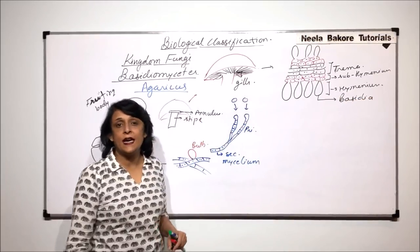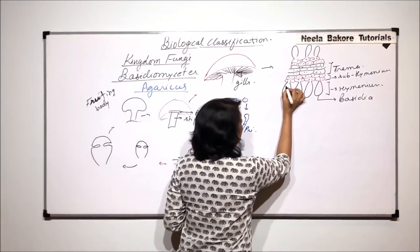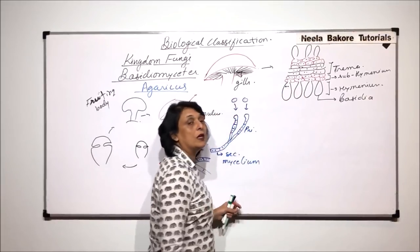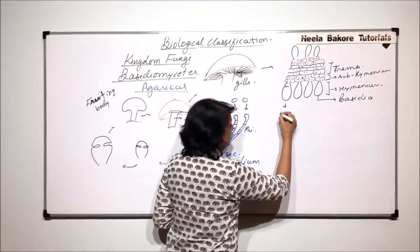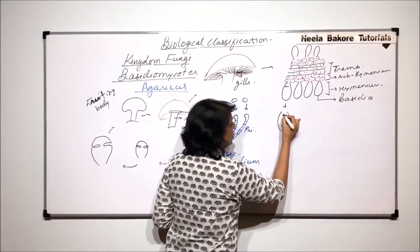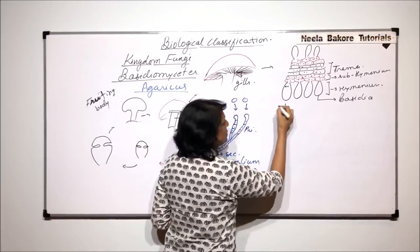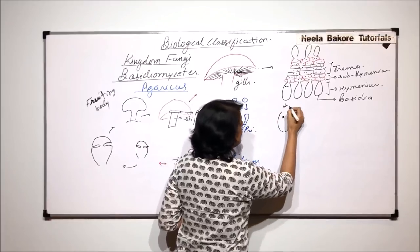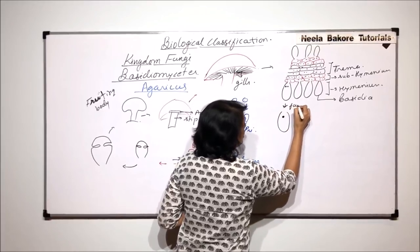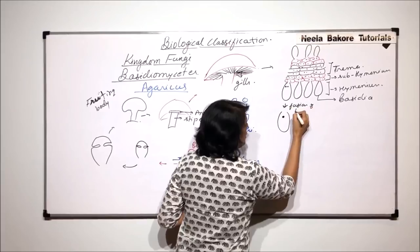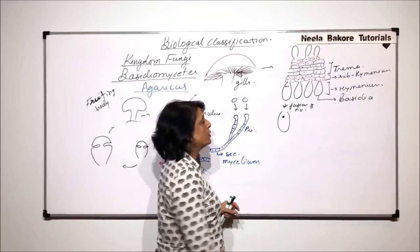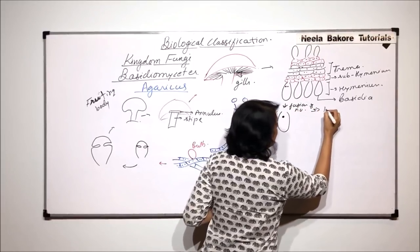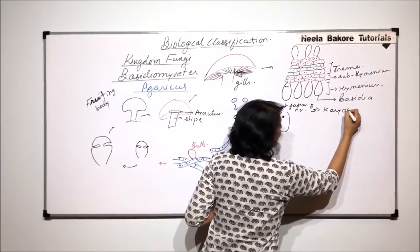What is happening inside the baesidium is, there are two nuclei. If we draw the next stage, these two nuclei, they are going to fuse. That means here, fusion of nuclei is taking place. Which is known as karyogamy. Fusion of nuclei.